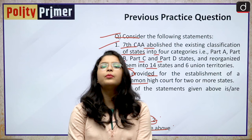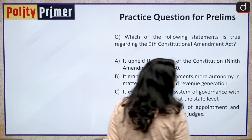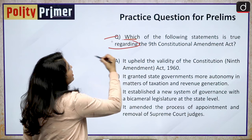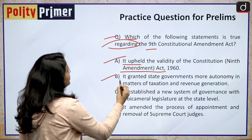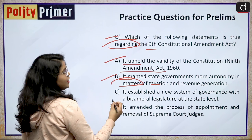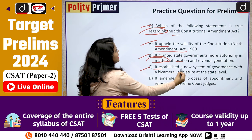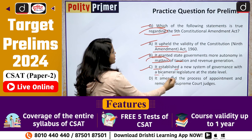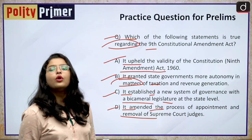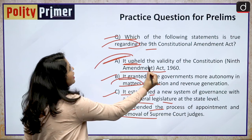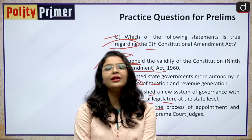Now let us discuss some practice questions from today's session. The question is: which of the following statements is true regarding the 9th Constitutional Amendment Act? Option A: it upheld the validity of the Constitutional 9th Amendment Act of 1960. Option B: it granted state governments more autonomy in matters of taxation and revenue generation. Option C: it established a new system of governance with a bicameral legislature at the state level. Option D: it amended the process of appointment and removal of Supreme Court judges. The correct answer is option A — it upheld the validity of the Constitutional 9th Amendment Act of 1960.